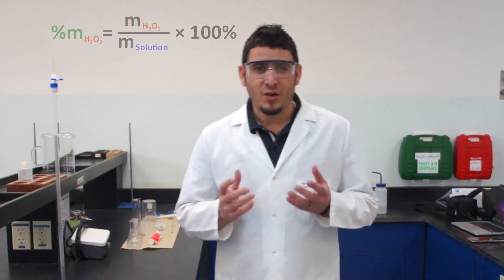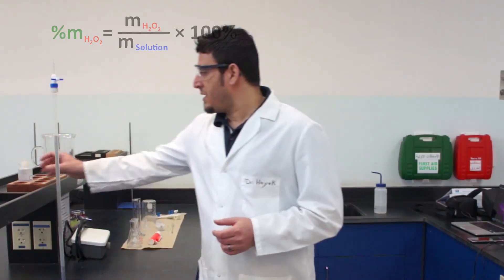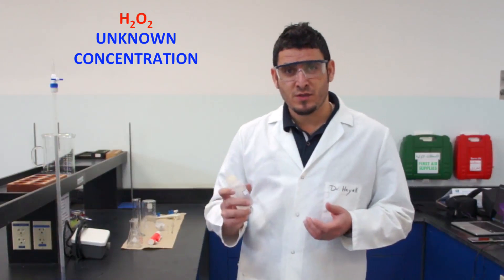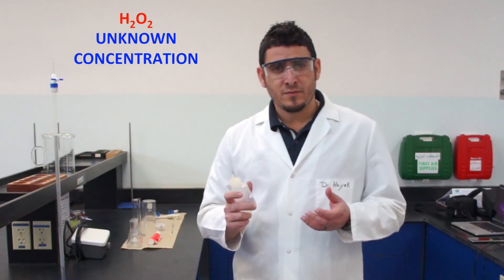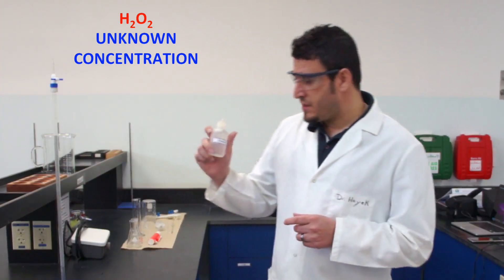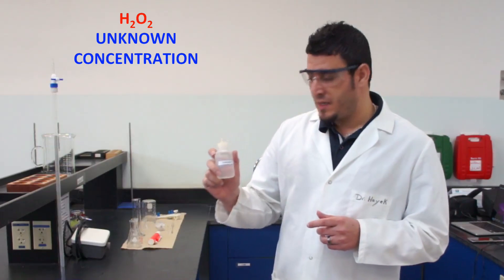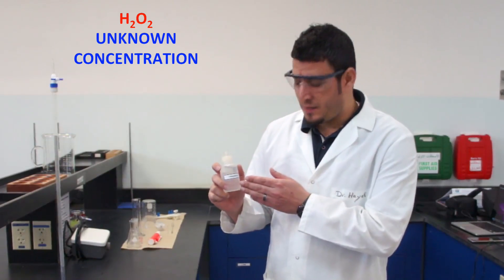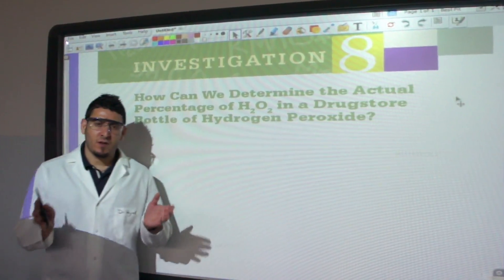In this video, I'm going to show you how you can determine the mass percent of a hydrogen peroxide solution using redox titration. We will discuss balancing the redox reaction and the stoichiometric calculations we will need to carry out, then we will come back and I will show you the details of the experimental procedure.